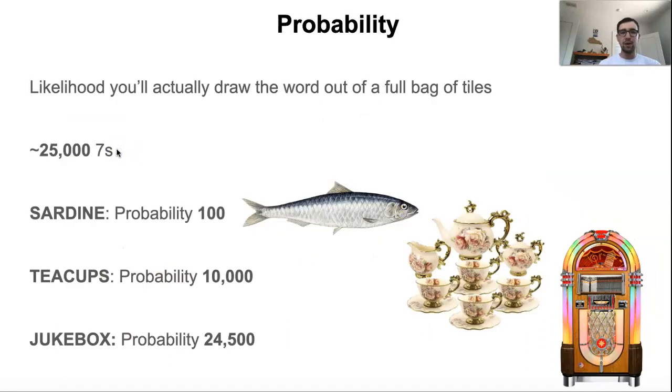Now in terms of probability, you'll recall that I mentioned probability when I was discussing bingos on my previous slide. And basically what I mean by this is the likelihood that the word will actually occur during a game or the likelihood that you'll actually draw the word out of a full bag of tiles. So in Scrabble, we typically talk about probability with lower numbers being more likely words to occur and higher numbers being less likely words to occur. And it's all relative to the number of words of that length. So for instance, if we look at sevens, there are just about 25,000 sevens. So probability number one would be the most likely seven to occur and probability number 25,000 would be the least likely seven to occur.